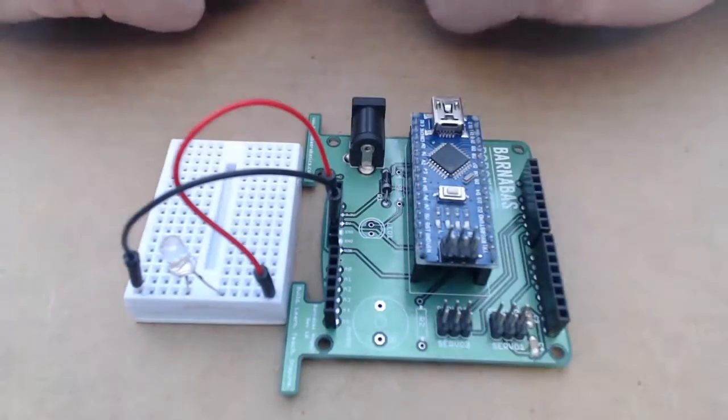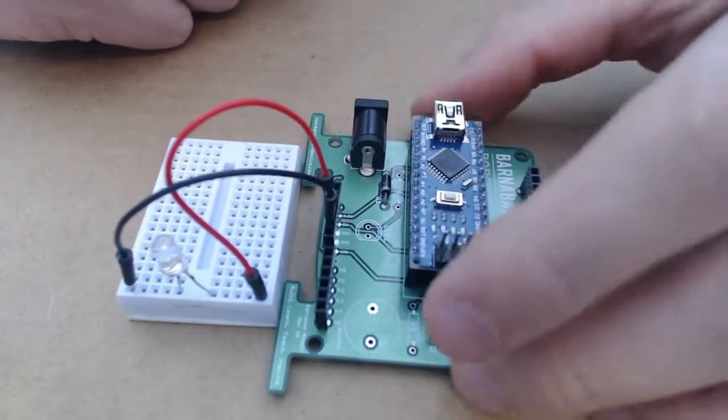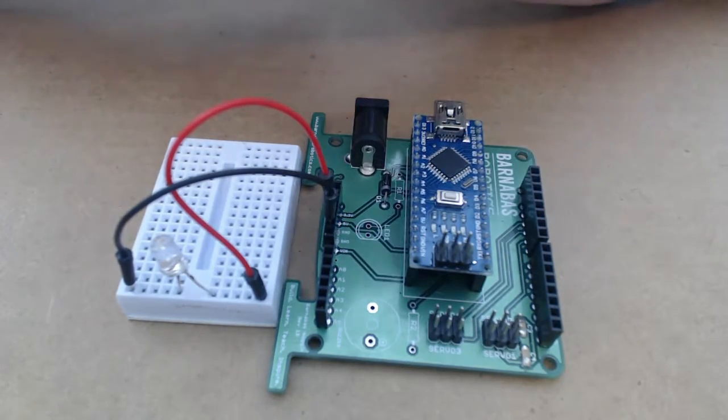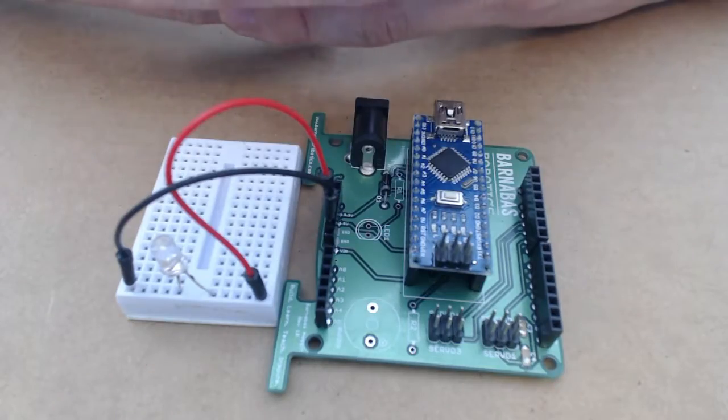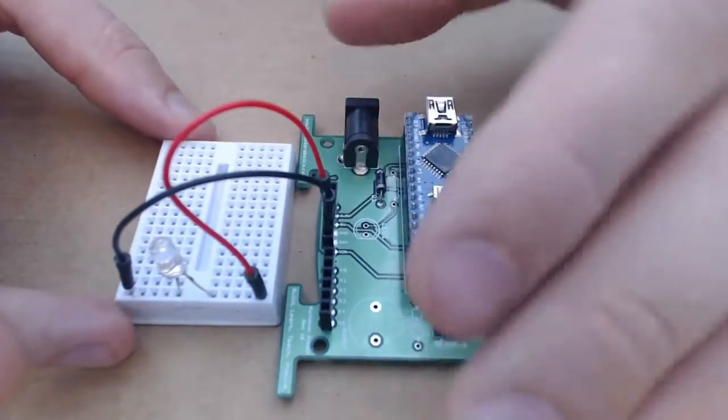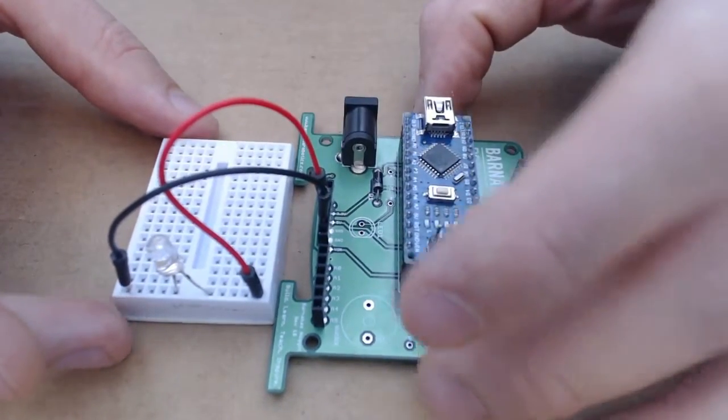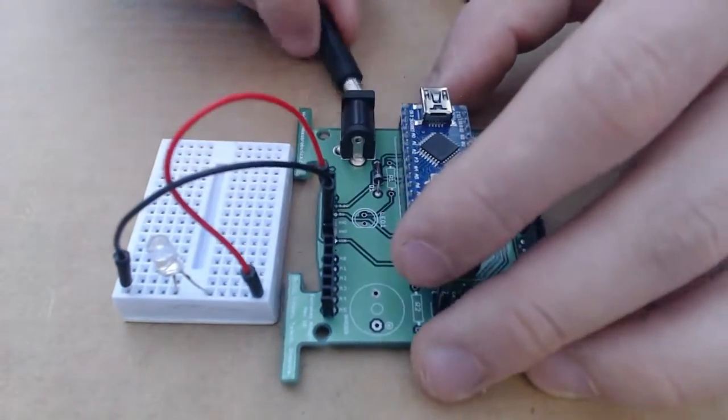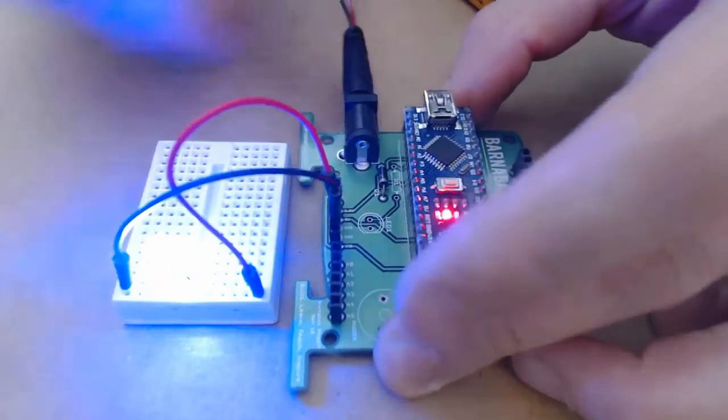So the Barnabas noggin actually provides more power than our two batteries did before. Those two batteries together provided 3 volts of power to the circuit. This Barnabas noggin will provide 5 volts of power to the circuit. So let's see what happens when I plug it in and actually give that power to the circuit.